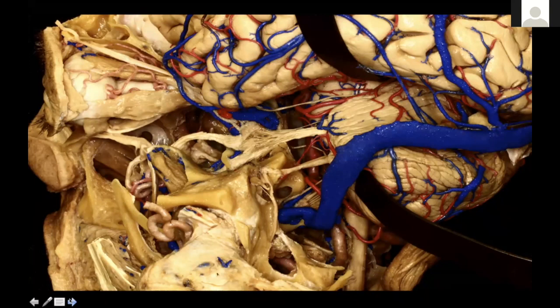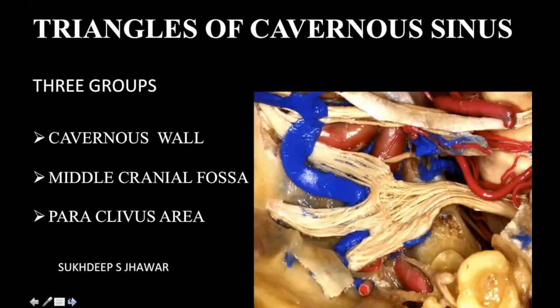In previous times, Parkinson's triangle and all these triangles were described in relation to approaching this artery — these nerves acted as geometrical, triangular areas. They were described in the literature for communication of various things. But all these lesions and pathologies don't understand these triangles; they involve critical areas in their own way. For better communication and learning, we need to know how this anatomy works. Anatomy is the same whether you watch it through an endoscope or a microscope, but the perspective changes.